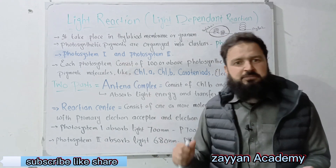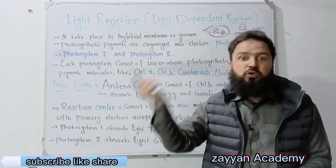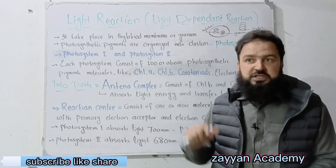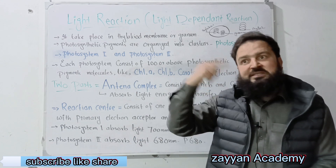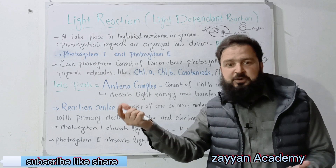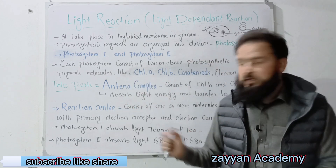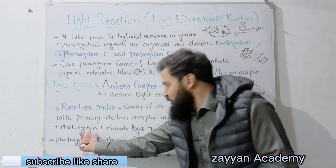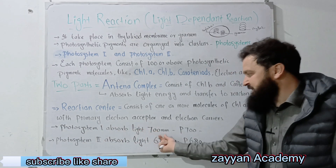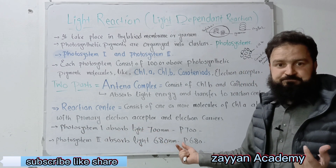Next we will see the cyclic electron transport chain and non-cyclic electron flow movement. We have photosystem one, which absorbs light of 700 nanometers.